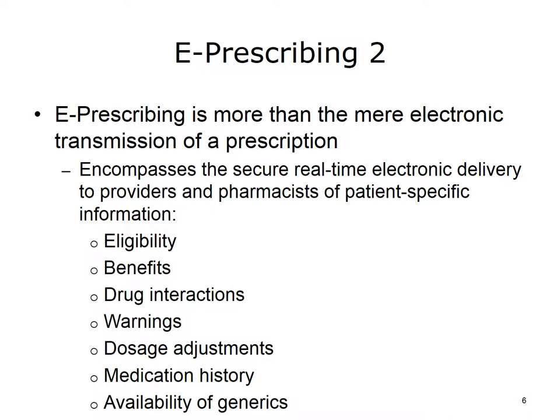E-Prescribing encompasses the secure, real-time electronic delivery to providers and pharmacists of patient-specific information. The information may include a patient's insurance eligibility, or what benefits they are entitled to, or whether or not there are drug interactions with a prescription being ordered, any warnings or dose adjustments that are recommended, and it may include medication history, and the availability of generic medications.